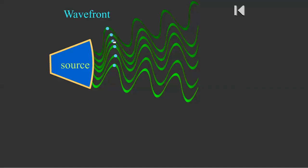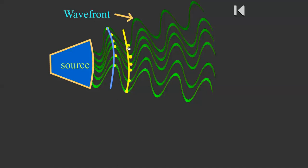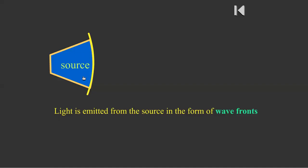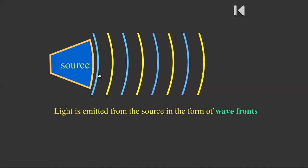These are the crests — the particles on these crests are in the same phase. When all these particles are considered and enveloped together, we get a surface called a wave front. This is a crest wave front. Similarly, the particles on the troughs, when joined together, form a trough wave front. So we can imagine a source of light emitting crest wave front, trough wave front, crest wave front, and so on.